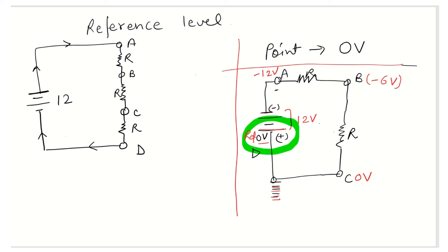Now let us consider the reference level. We take the midpoint of the resistor connected between points B and C as the reference level. At this reference level, the voltage should be zero volts.